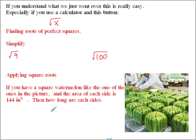Now these are a funky set of fruit called watermelon, but they've made them square by growing them in a particular way. So if you have a square watermelon like the ones in the picture, and each side is 144 inches squared, how long are each sides? Well, a square has a side, only one side, so just take the square root of that, so it's just going to be 12 inches. It's going to be the value of the side of the watermelon.